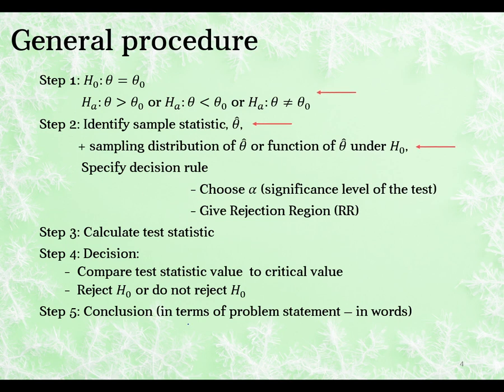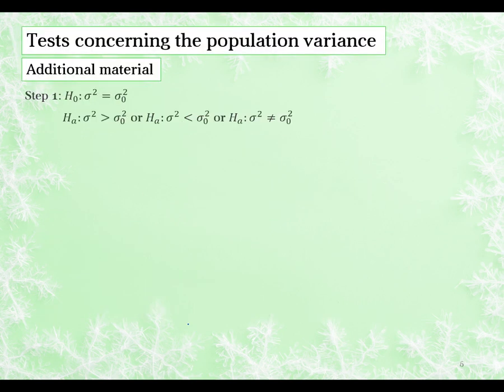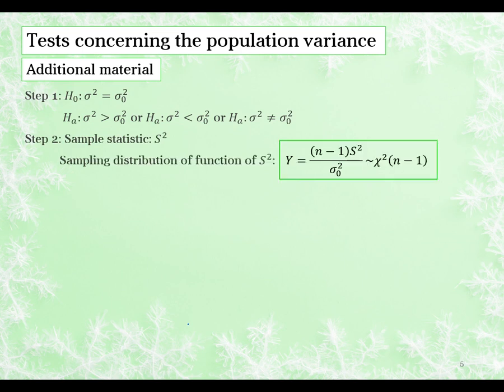For tests for the variance, our null and alternative will now be related to the variance — sigma squared. Notice that it's sigma squared and not sigma, so we're not doing a test for the standard deviation. If we have a question in terms of standard deviation, you first need to translate it to variance and then perform your test. The sample statistic we're going to look at is the sample variance s squared, and the test statistic is just a function of the sample variance.